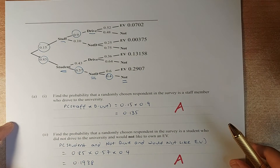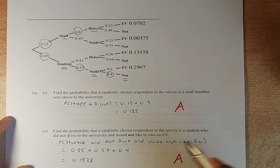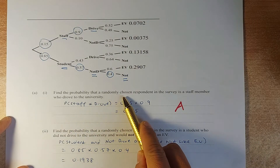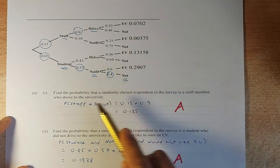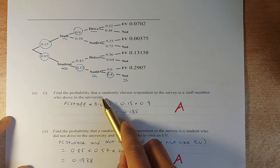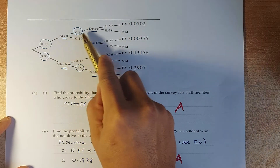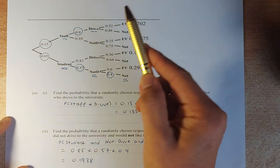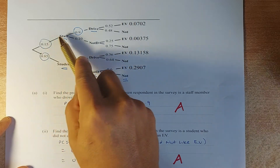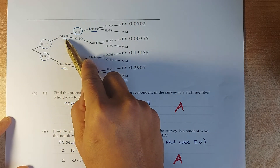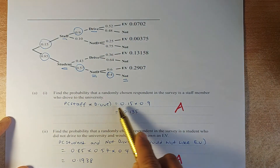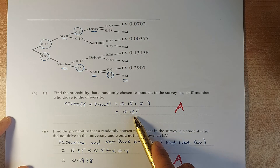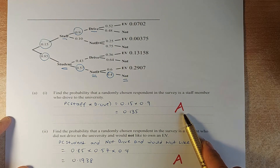The first question: find the probability that a randomly chosen respondent in the survey is a staff member who drove to university. We are looking at staff who drive, so we use the probability that leads to it. Staff that drive: 0.15 times 0.9 gives you 0.135, and that will give you an Achieve.